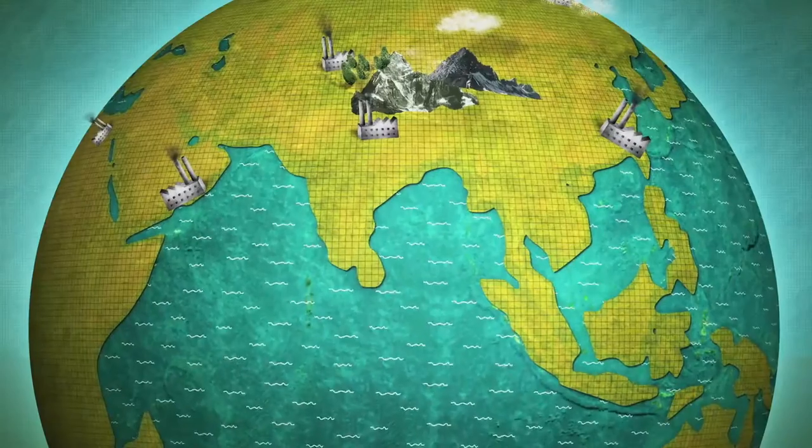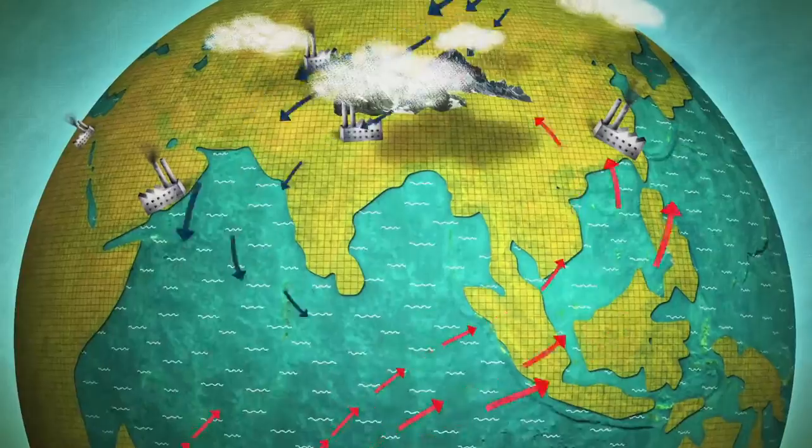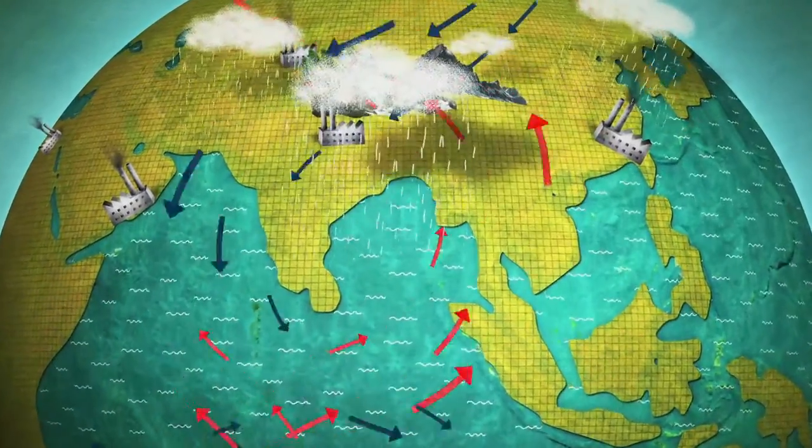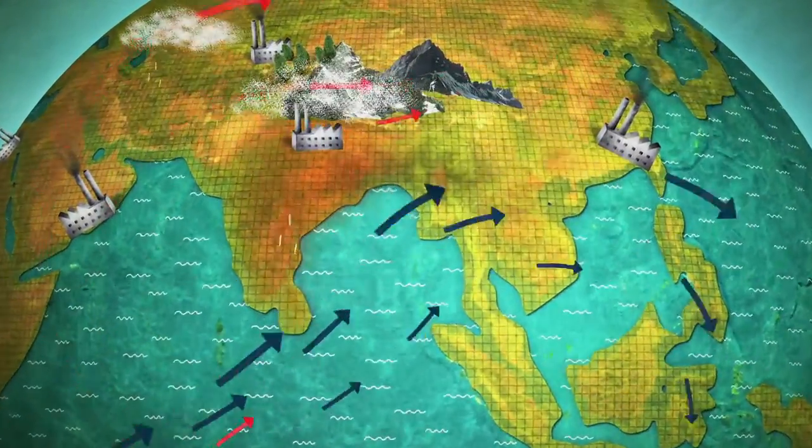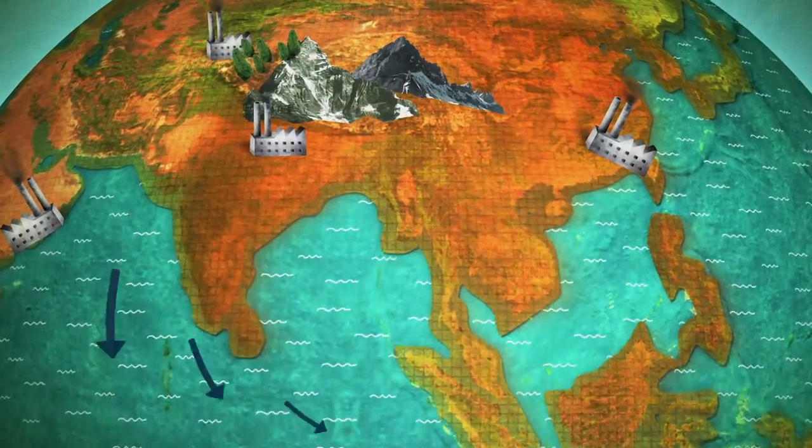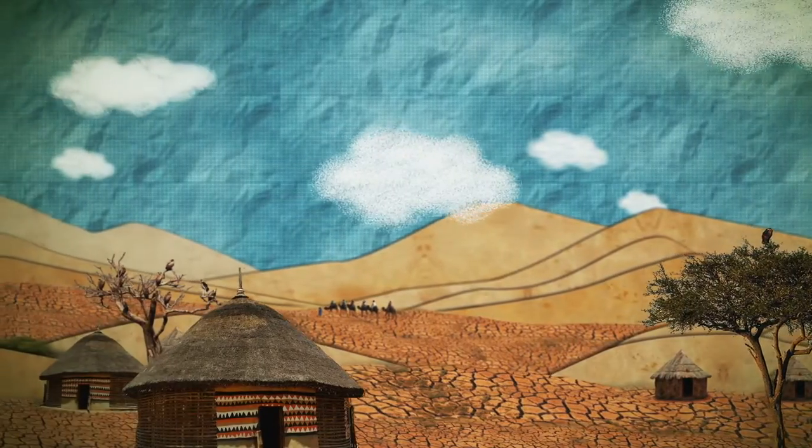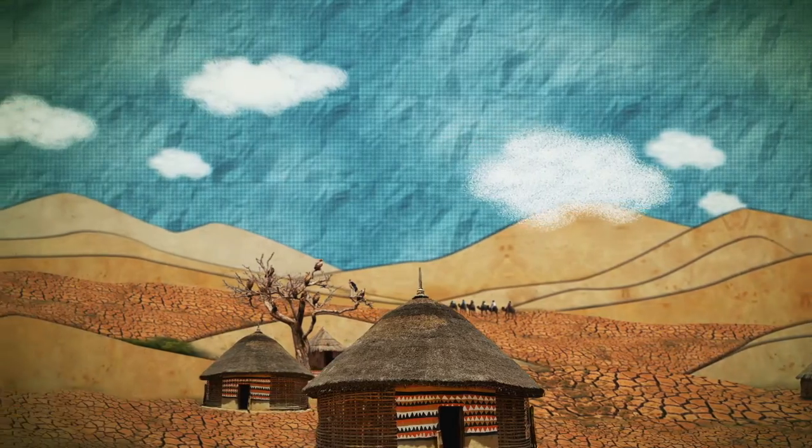In Asia, SAI could upset the complex system governing the monsoon, on which the water and food supply of two billion people depends. It could also lead to droughts in sub-Saharan Africa, while causing flooding in Latin America.